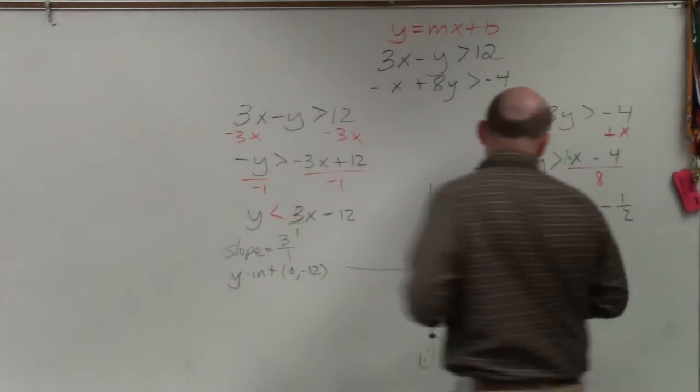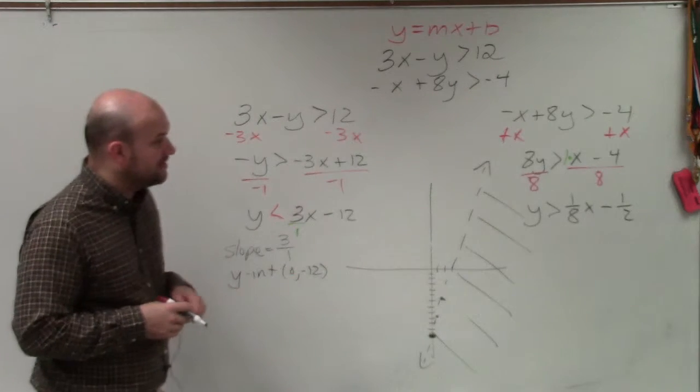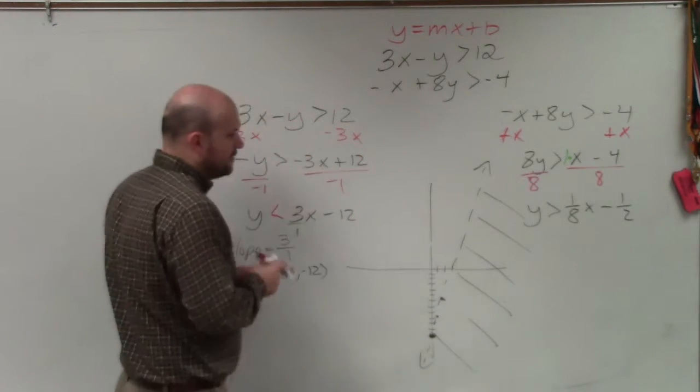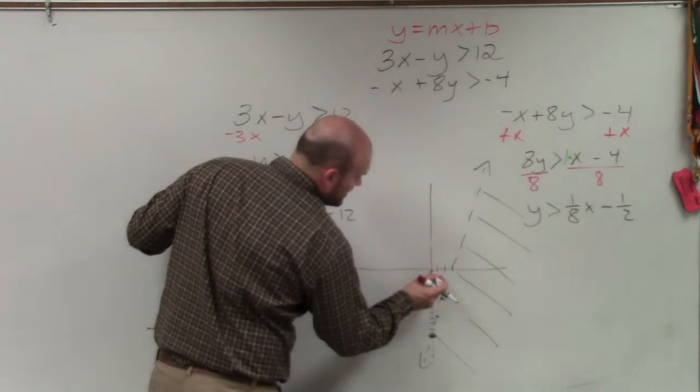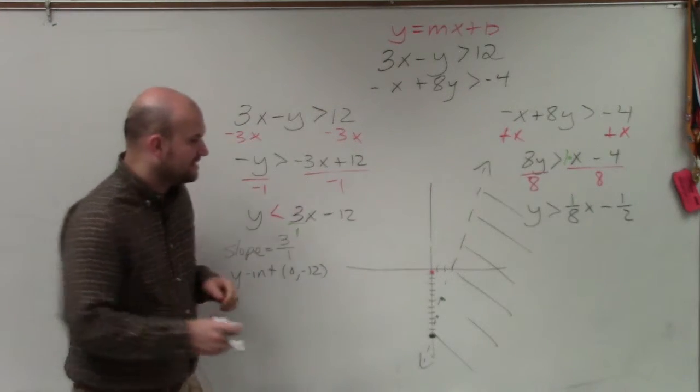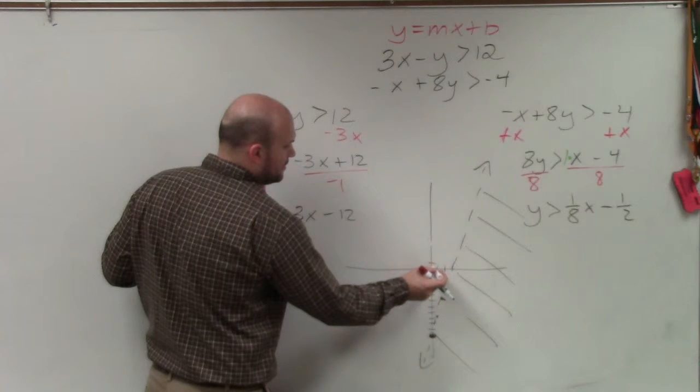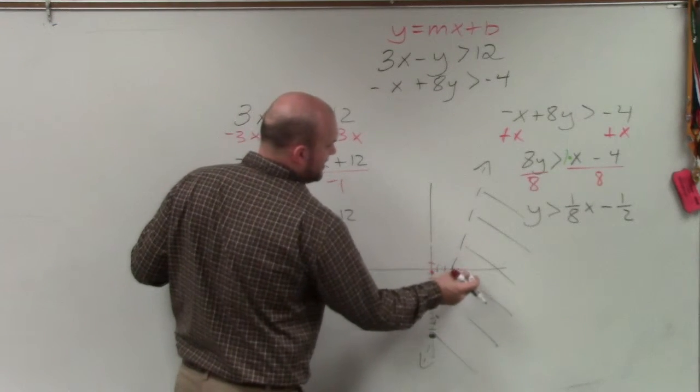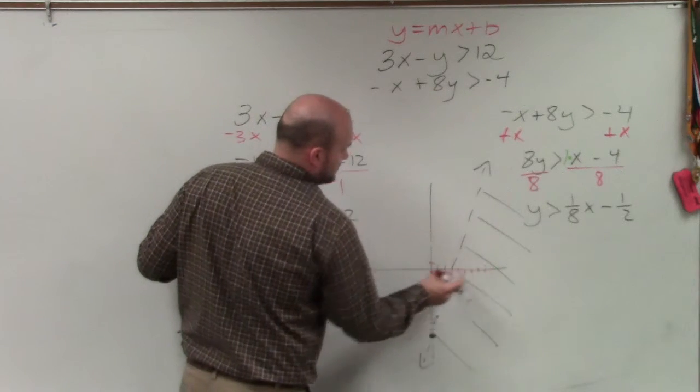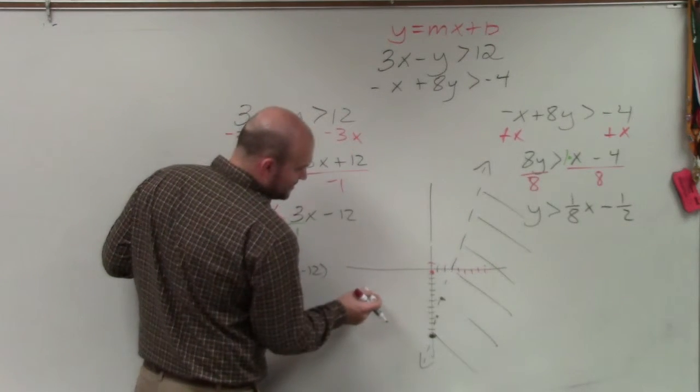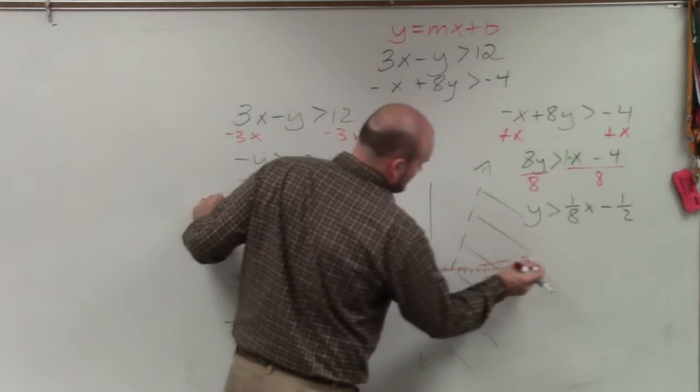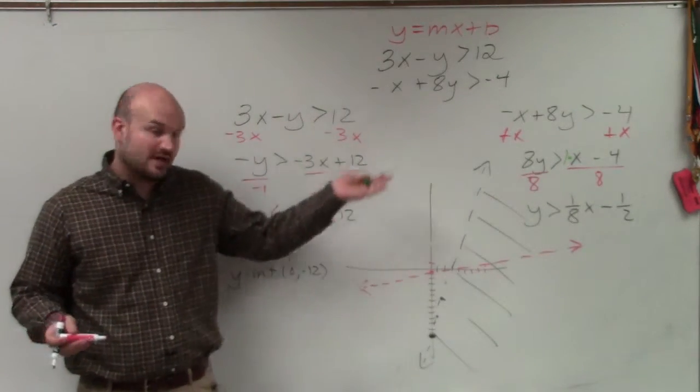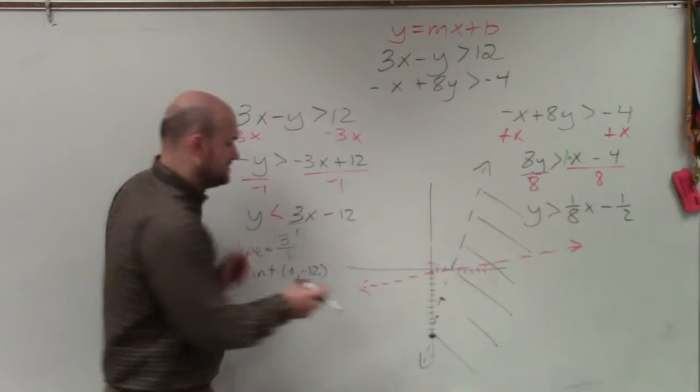So you're going to want to make sure you include your shading on all of your systems, or your inequalities, because these are inequalities, not equations. Then the next one here, now my y-intercept is negative 1 half, which is right here. And then my slope is going to tell me to go up 1, which would be right there. And then over 8, 1, 2, 3, 4, 5, 6, 7, 8. And again, that's greater than, so it's a dashed line. And greater than would tell you to shade above, as long as y is solved and it's isolated.